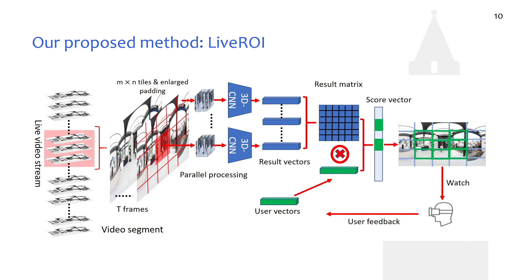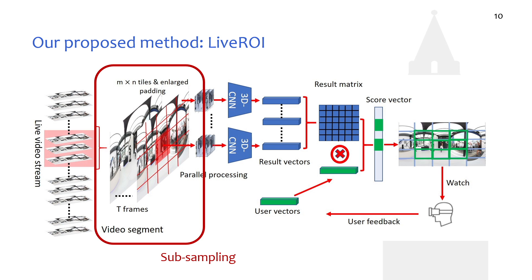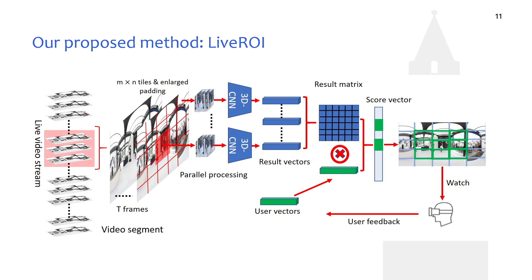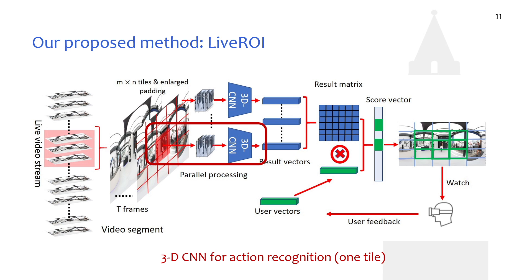This is the framework of our proposed method based on the findings of the user preference study. Once we get the streamed video, we first get one video segment — the unit for video processing and viewport prediction. Within this segment, we subsample the frames, keeping T frames for video content analysis. For each selected frame, we uniformly divide it into small tiles, and for each tile we process and analyze the actions inside. The content of the same tiles from all selected frames is collected for video content analysis using a 3D-CNN model for action recognition. To achieve high recognition accuracy, we enlarge the area while maintaining the same center to avoid missing important parts at the edges.